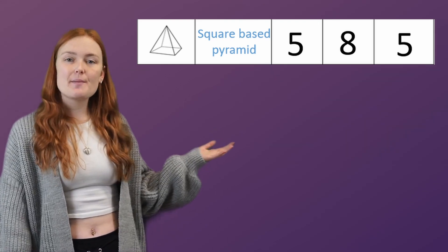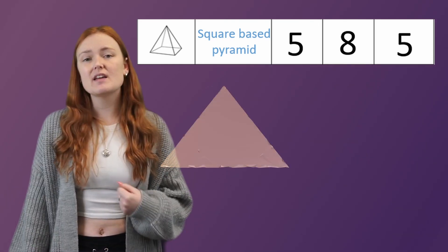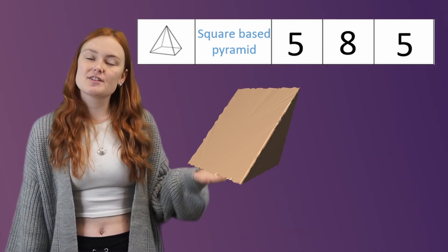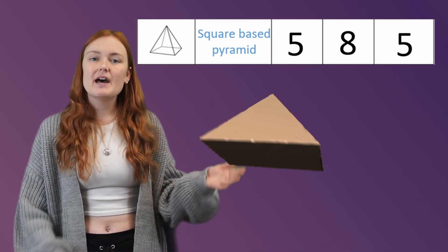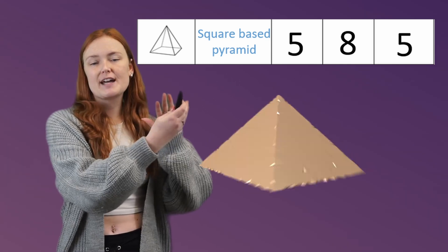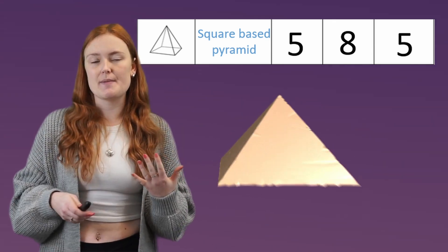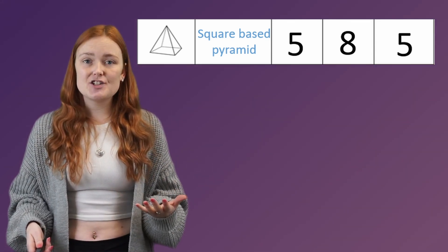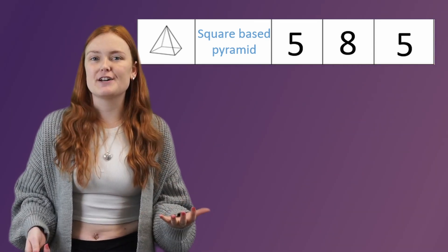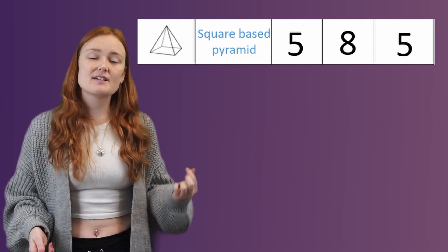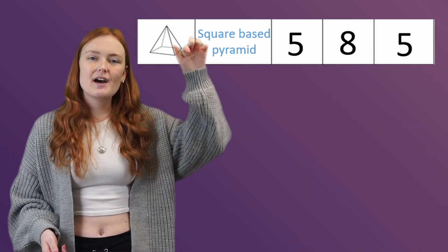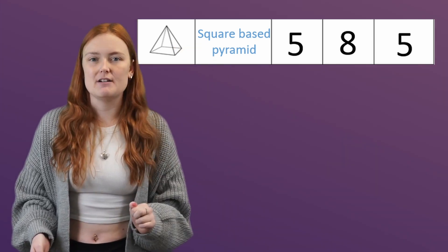Next up is a square-based pyramid. This one has 5 faces: the square on the bottom and then 4 triangles that join up to make the pyramid. It has 8 edges and 5 vertices, because it's only got the 4 corners on the bottom and then the point at the very top.